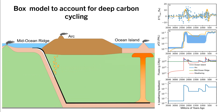Now I'm going to walk you through the model results. The top panel shows the delta-13C of marine carbonates with natural data in blue and model results in orange. The second panel shows atmospheric oxygen levels through time with proxy-based estimates in blue and model results in orange. The third panel shows carbon fluxes from weathering, carbon burial, and different volcanic settings. The final panel shows K, which is a variable that controls how sensitive continental weathering is to atmospheric CO2.